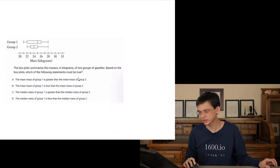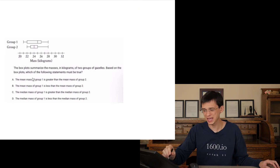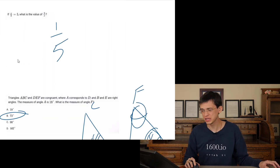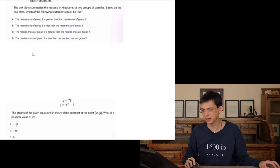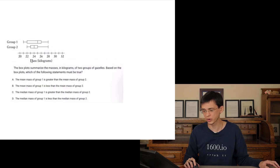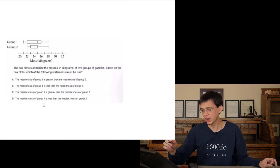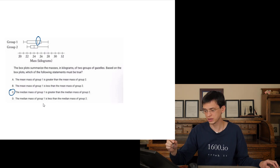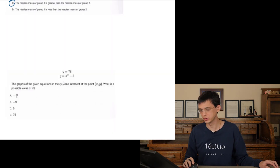Box and whiskers — which of the following statements is true? We're looking at groups A and B. Choices A and B refer to the mean, but means are not shown in box and whisker plots, so we only deal with C and D. The median of group 1 is bigger than the median of group 2.